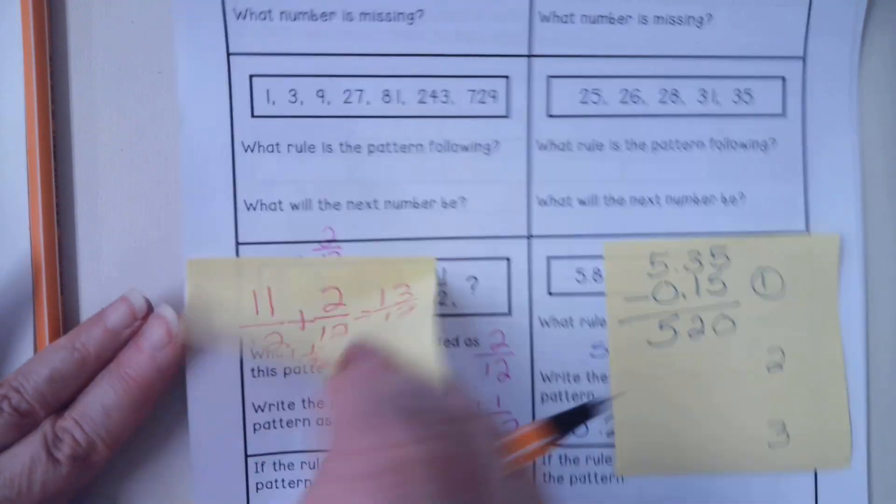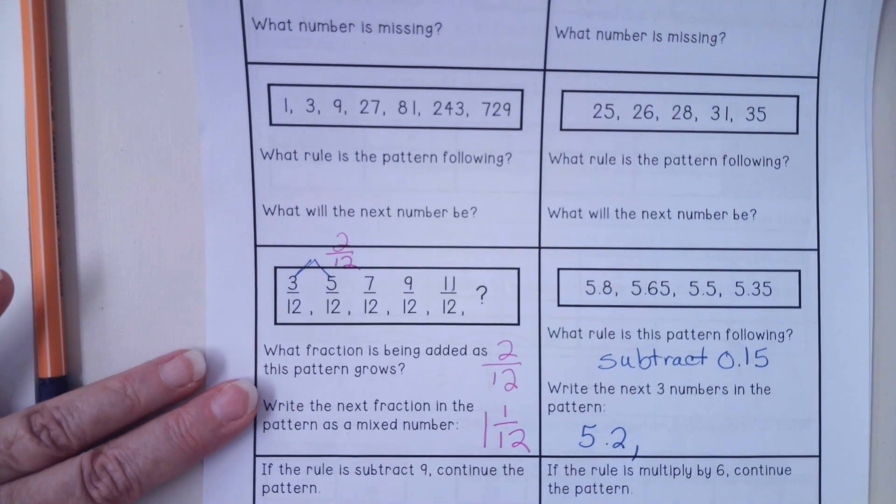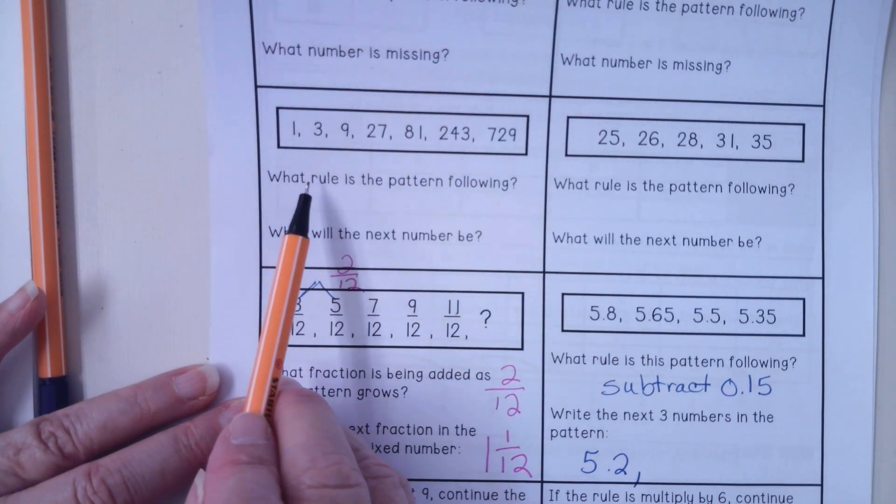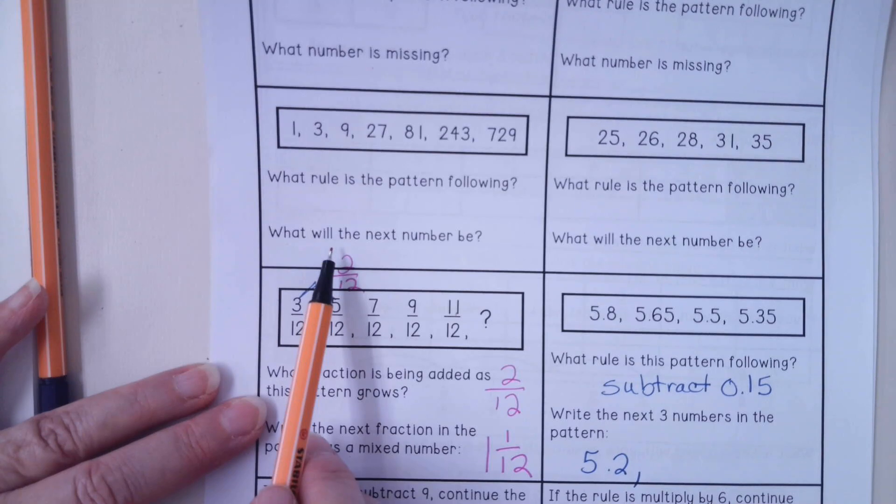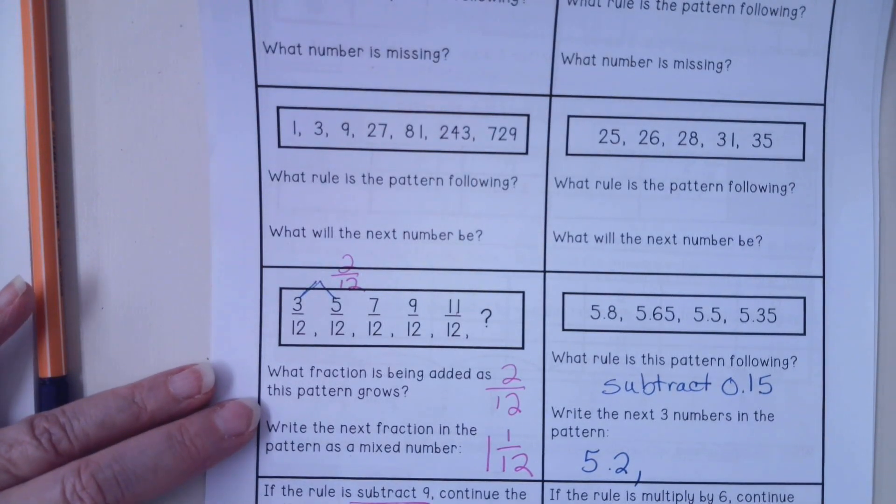The rest of this is pretty much what we're used to. You must write the rule for the pattern and you must answer the next question. It's usually what's the next one or what's the missing one. So just make sure even this one, they're giving you the rule. This one, they're giving you a rule. So make sure you follow those.